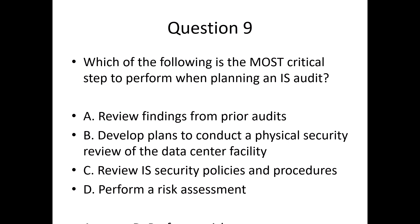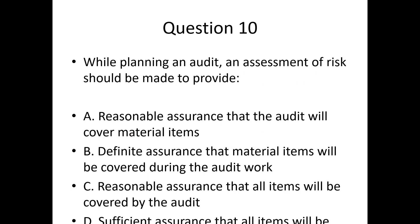Question 10. While planning an audit, an assessment of risk should be made to provide: A. Reasonable assurance that the audit will cover material items. B. Definite assurance that material items will be covered during the audit work. C. Reasonable assurance that all items will be covered by the audit. D. Sufficient assurance that all items will be covered during the audit work.